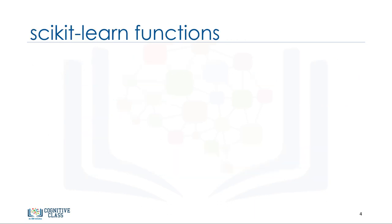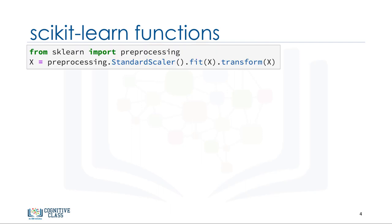Let me show you an example of how Scikit-learn looks when you use this library. You don't have to understand the code for now, but just see how easily you can build a model with just a few lines of code. Basically, machine learning algorithms benefit from standardization of the dataset. If there are some outliers or different scale fields in your dataset, you have to fix them. The pre-processing package of Scikit-learn provides several common utility functions and transformer classes to change raw feature vectors into a suitable form for modeling.